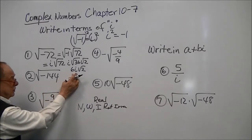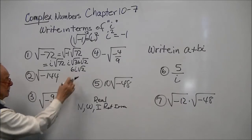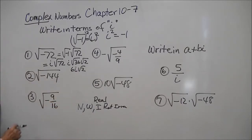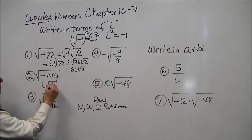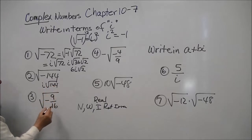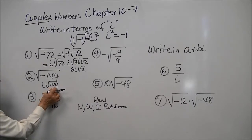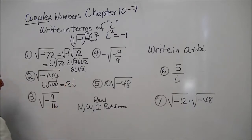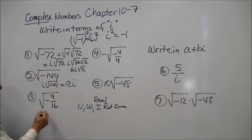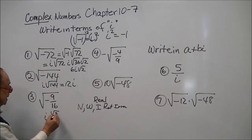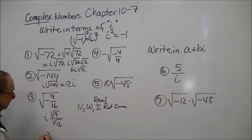By protocol, we usually put the i in front of the radical sign. So this next one is going to be i times the square root of 144 — we take the negative one out as i — and the square root of 144 is 12, so this becomes 12i. Then we take out the i and we're left with the square root of 9 over the square root of 16, which becomes three-fourths i.